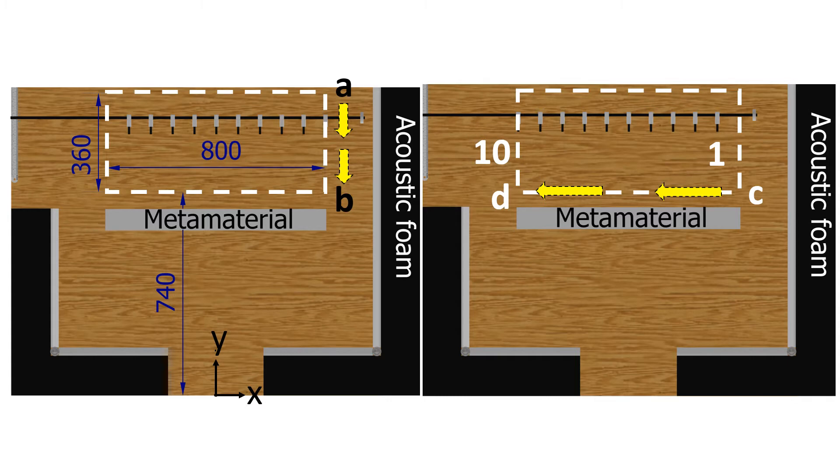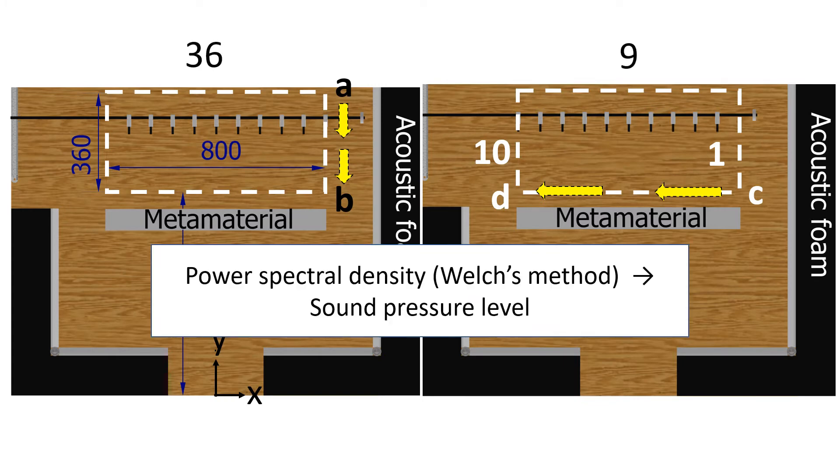The pressure measurements were converted into power spectral density using MATLAB. The power spectral density is a measure of how the power of the signal is distributed in the frequency domain. We then calculate the sound pressure level based on this and the matrices were post-processed to form a contour plot.